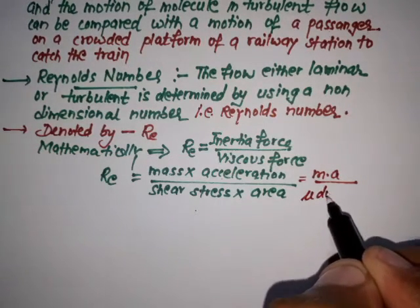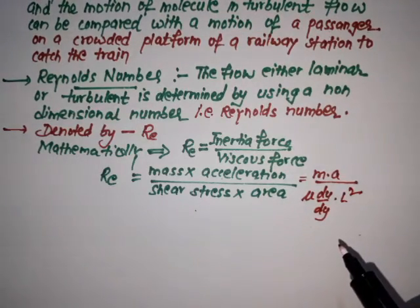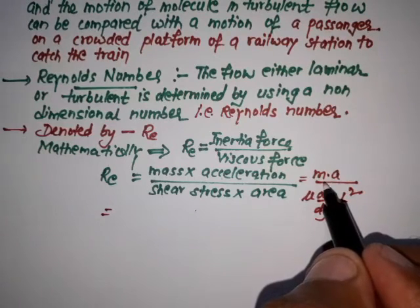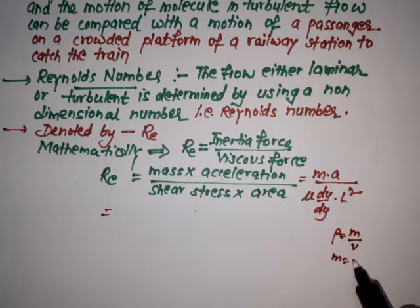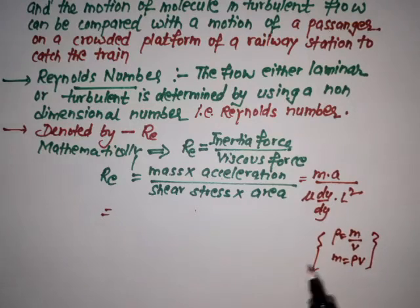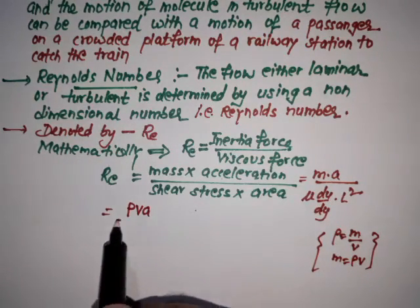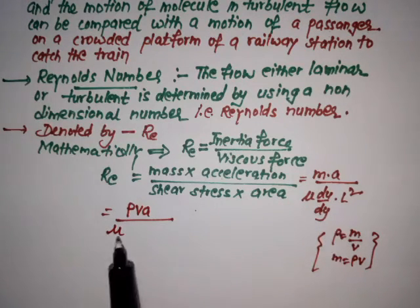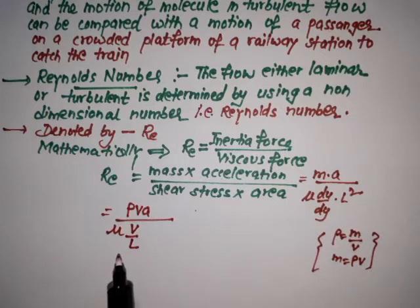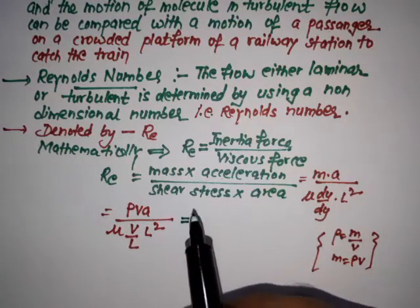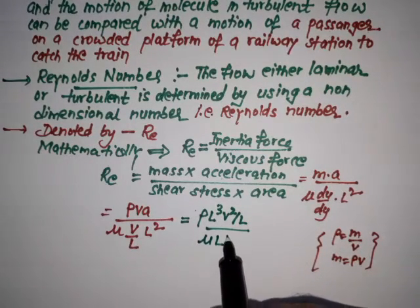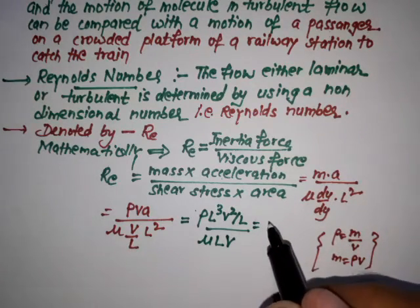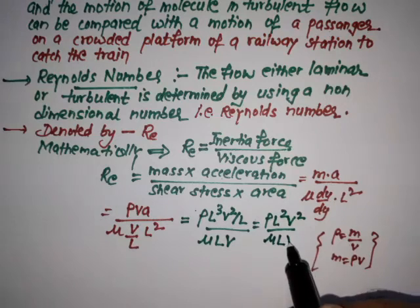And here M, as we know, ρ = M/V, so M = ρV. So substitute here: we get ρV·A upon μ·dU—that is the velocity V—dy is the displacement L, that is L². We take all the values: ρL³V² upon μLV.